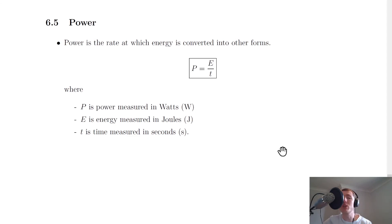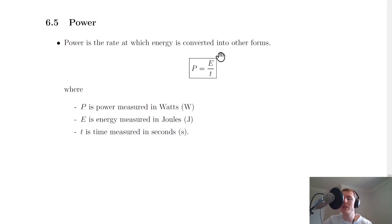Finally, a quick note on power. Power is the rate at which energy is converted into other forms. The equation, which is on the relationship sheet, is P = E/t, where P is power measured in watts, E is energy in joules, and t is time in seconds. That's all for this video — I hope you found it useful. If you did, give it a like, subscribe, and I'll see you in the next one.